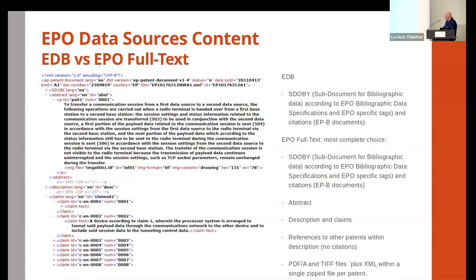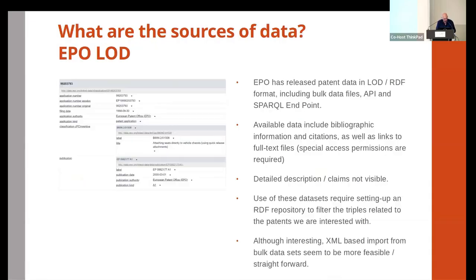There are also differences between the EDB product and the European Patent Office full text database — different things are covered, and the full text option is probably the most complex choice among EPO alternatives. Additionally, there is a linked open data initiative at the European level providing patent information as linked open data through a SPARQL endpoint, though some information such as detailed descriptions and claims is not available through it.